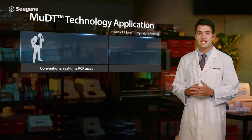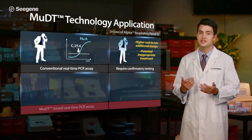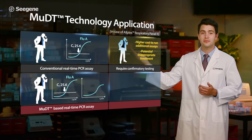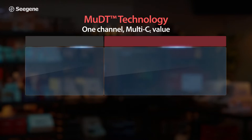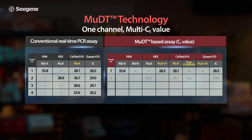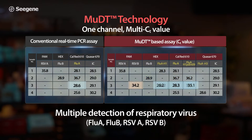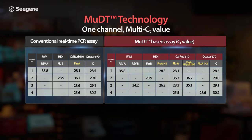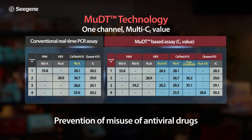MUDT is applied in Cgene's AllPlex Respiratory Panel 1. This panel can detect Flu A and its subtype simultaneously with CT values. Furthermore, Cgene's MUDT-based AllPlex Respiratory Panel 1 provides infection information of other concomitant respiratory virus infections, providing a clear understanding of the complete disease state. This information supports faster and better patient care.